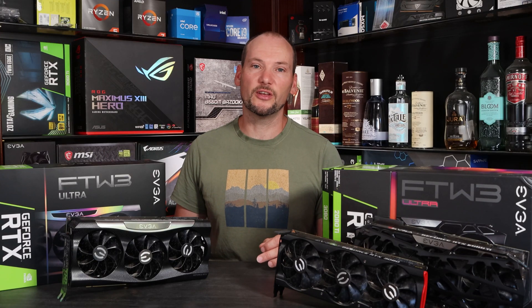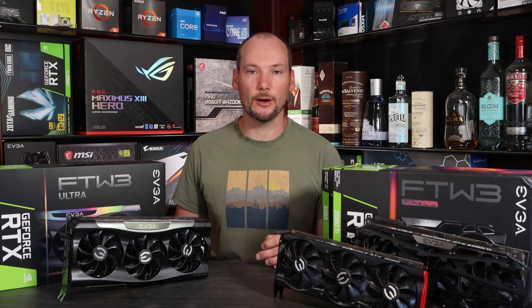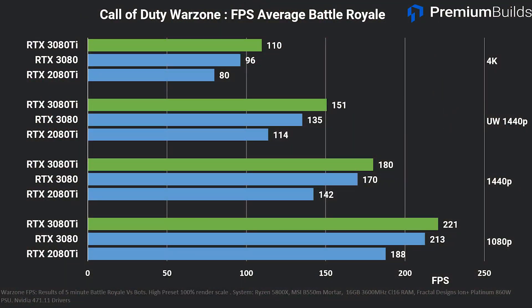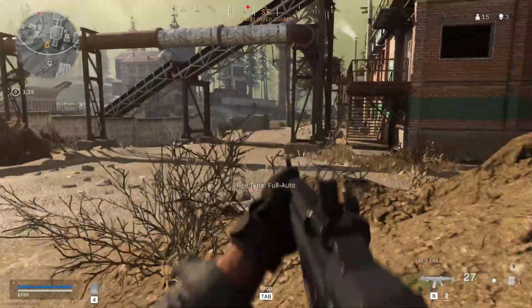Moving on to games, Warzone is first up. We test this by running a 5-6 minute battle royale against bots and logging metrics throughout. The recent update knocked performance back about 15% across the board and I've had to omit the RX 6800 XT as we no longer have it available for testing — it performed near identically to the RTX 3080 so please take that as a proxy. Warzone proves itself a stern test of both CPU and GPU. The 3080 Ti only marginally outperforms the 3080 at 1080p, scoring 221 fps average to 213 fps average. At 1440p again there's only a 10 fps difference, 180 fps to 170 fps. At ultrawide 1440p we see a little wider gap proportionally with a 16 fps difference. The RTX 2080 Ti is 30 fps behind throughout. At 4K we see the 3080 Ti post just over 100 fps at 110, whilst the 3080 makes 96 fps. Overall in Warzone we don't see a performance gap commensurate with either the specification or pricing of these GPUs.